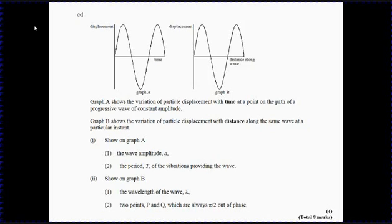So it says show on graph A the amplitude. Well, actually you could have shown that on either graph. Please be careful, make the effort, get a ruler, draw the line carefully, make sure that your arrows actually reach both ends, label that A. But then the period T of the vibrations providing the wave - obviously it's told you to do this on graph A, but it has to be on graph A. Graph B doesn't give you any idea at all what the period is.